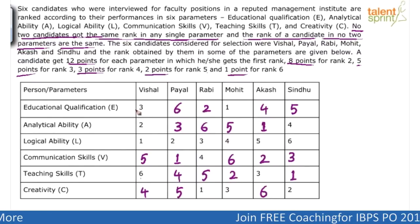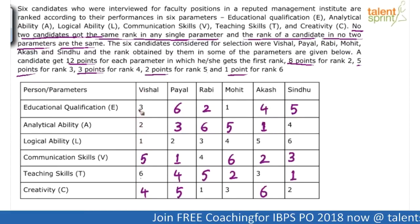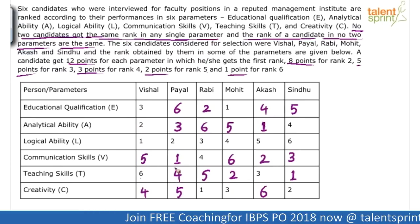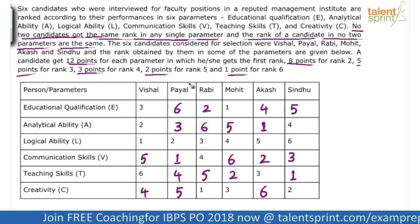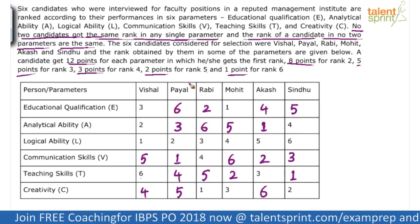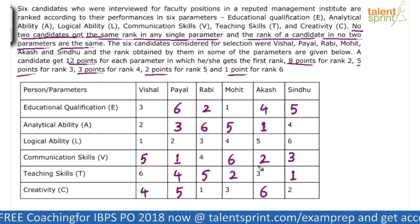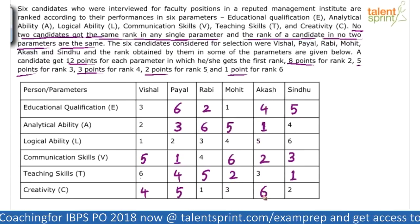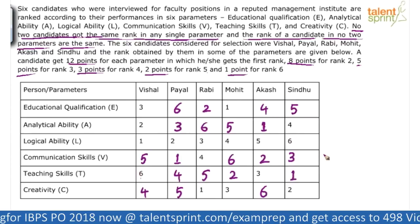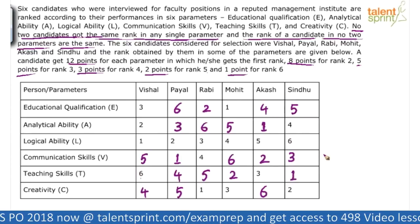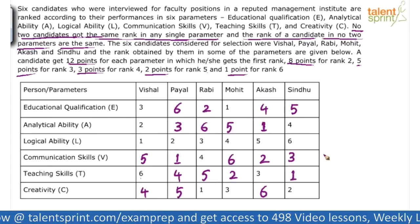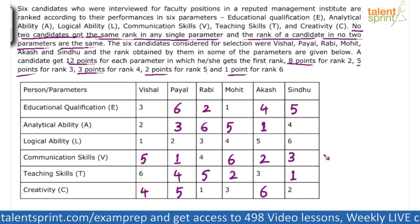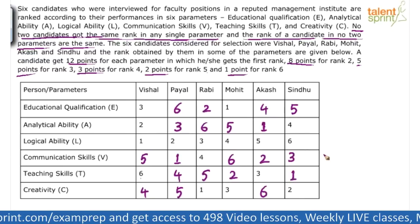Once done, verify that no row or column has repeating values. Each row and column should contain unique values from 1 to 6. If you spot any repetition, you have gone wrong somewhere and will need to start from scratch. When each row and column checks out with all unique values, the table is complete.